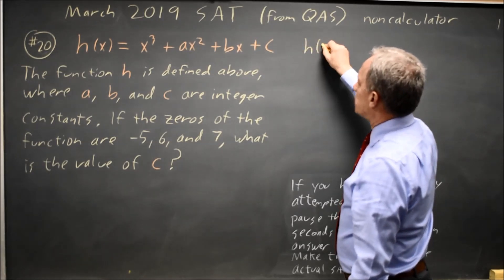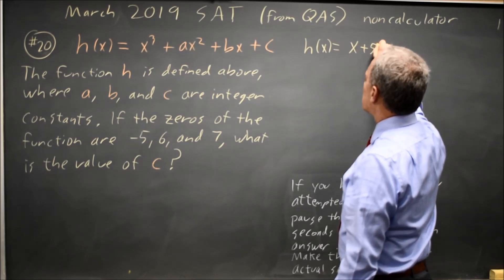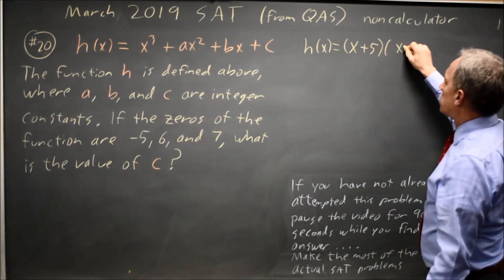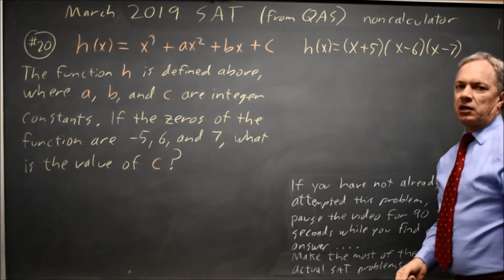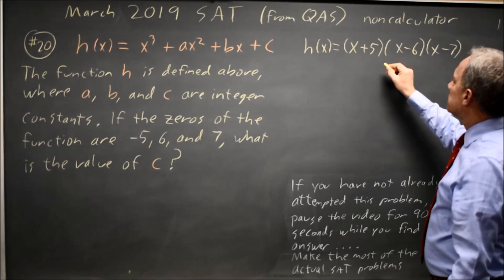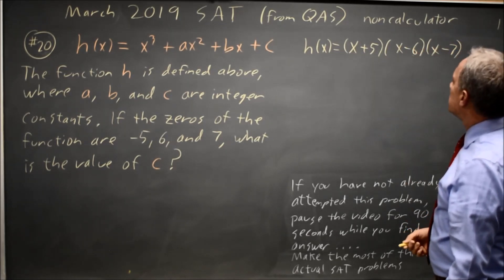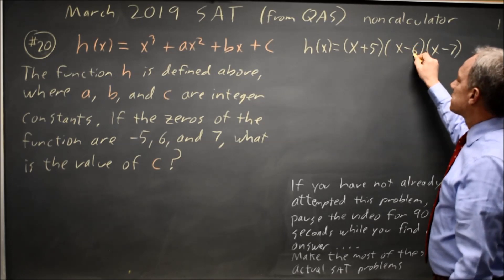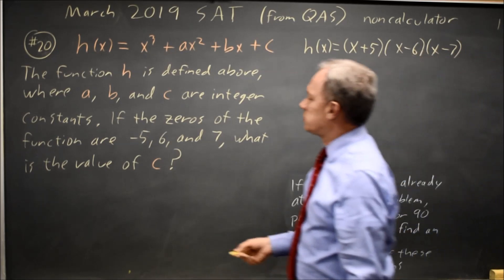Since we have the zeros, we know h(x) is equal to (x minus negative 5), (x minus 6), (x minus 7), and FOIL and then distributing will give us a constant of 5 times negative 6 times negative 7. 5 times negative 6 is negative 30, times negative 7 is 210.